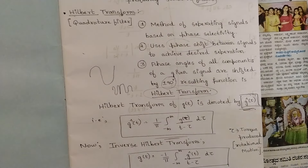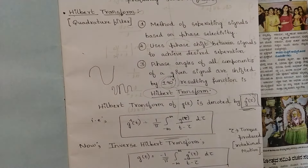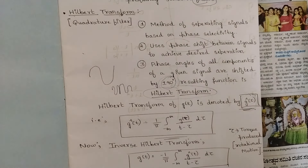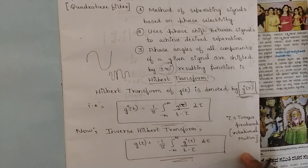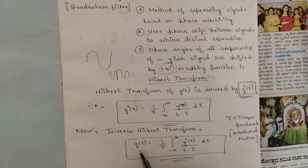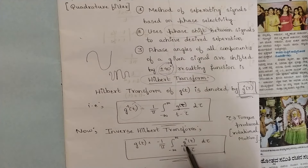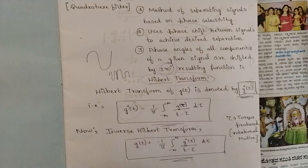The Hilbert Transform is given as: ĝ(t) = (1/π) ∫ from −∞ to +∞ of g(τ) / (t − τ) dτ, where τ (tau) is the torque produced by rotational motion. Whenever phase shift of plus or minus 90 degrees takes place, the torque is produced, which is responsible for phase reversal or separation of the signals.